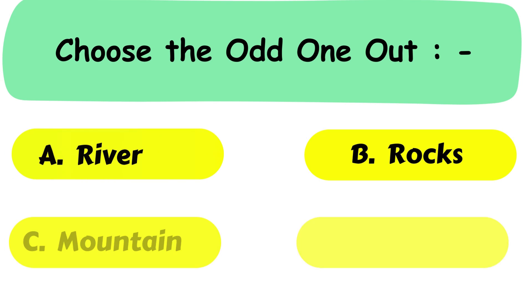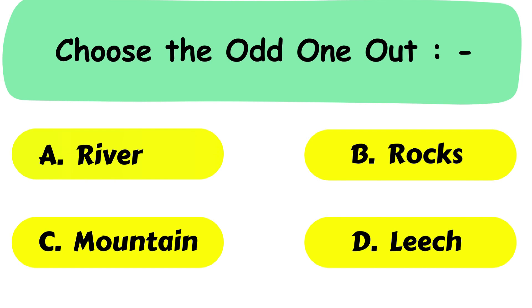Question No. 8. Choose the odd one out. A. River. B. Rocks. C. Mountain or D. Leach.